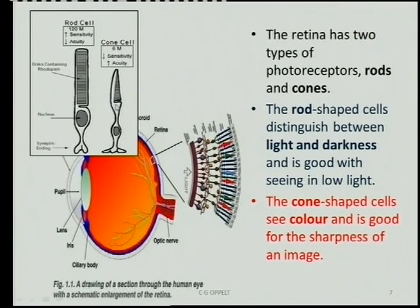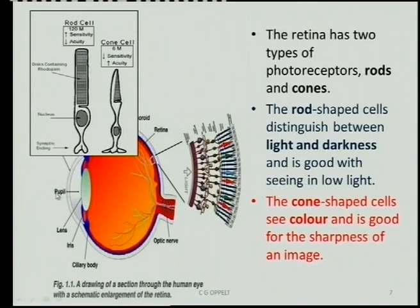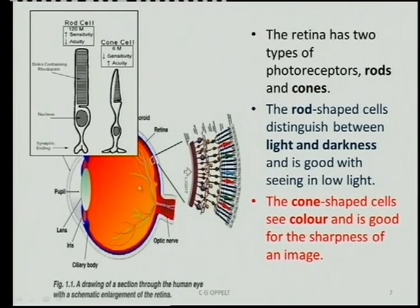Let's have a look, and just very quickly before we go through — because this is important when we look at the functioning of the eye — the parts where light has to go through. We call it the lens system. Those four parts are: the cornea, the aqueous humor, the lens, and the vitreous humor. Those four parts are where light has to go through so that it can reflect and clear vision can be seen on the fovea or the yellow spot.